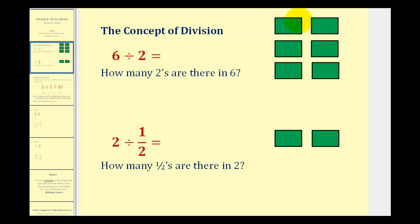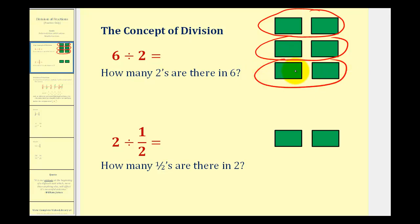Looking at our model for six, if we make groups of two, notice there are three groups of two — one, two, three. This is the reason why six divided by two is equal to three.